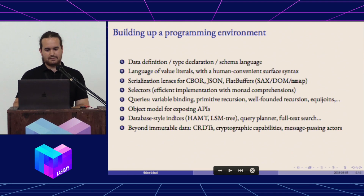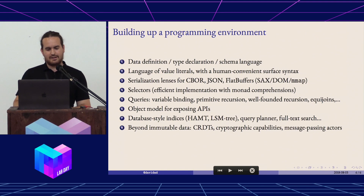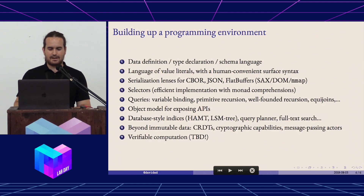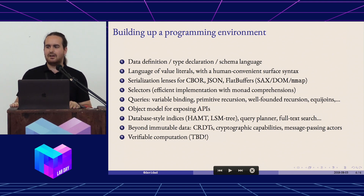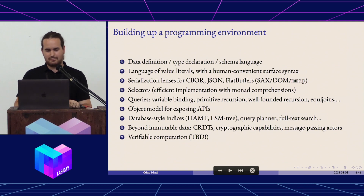Then an object model for exposing those queries as APIs and giving them human-readable names, database-style indices, and beyond immutable data: CRDTs, capabilities, actors — and ultimately unrestricted computation, verifiably, in this decentralized environment.